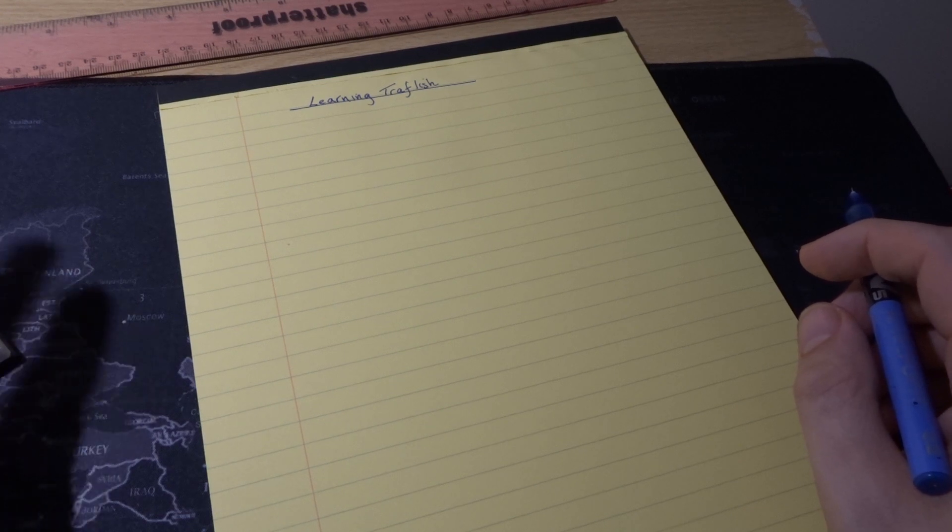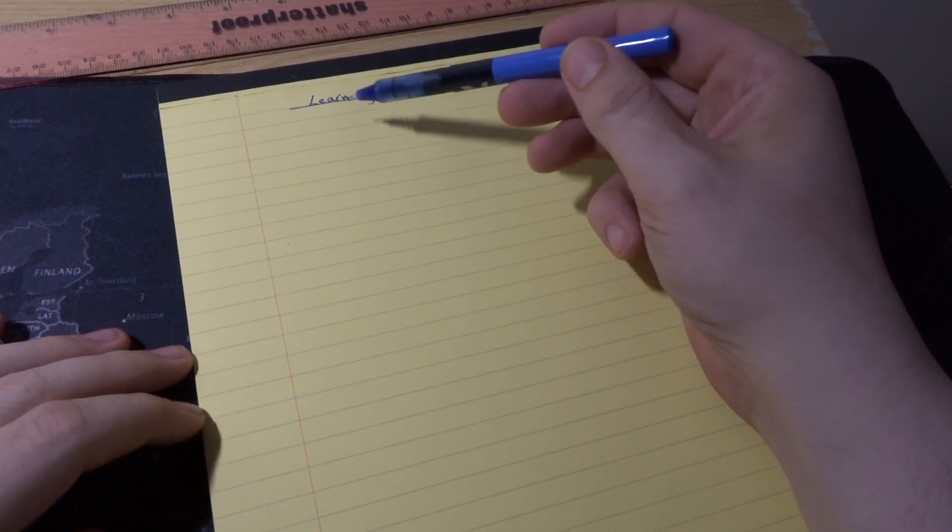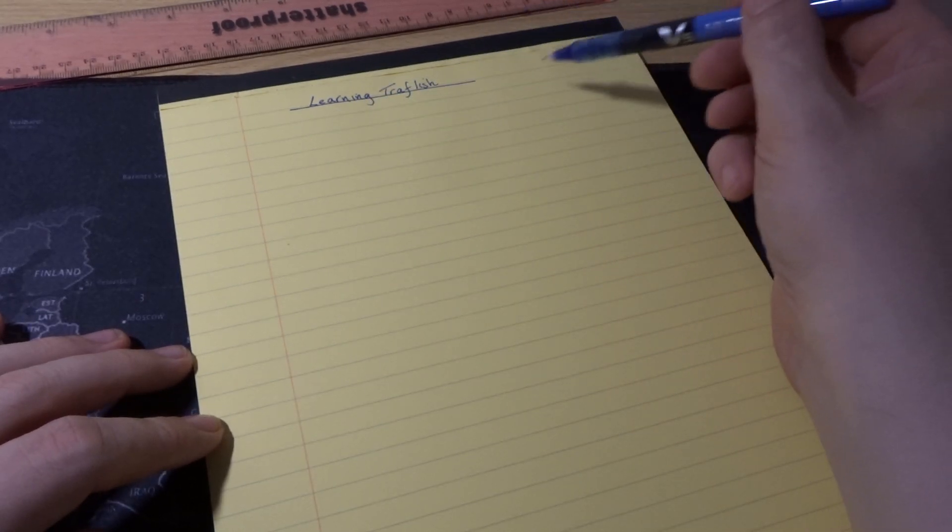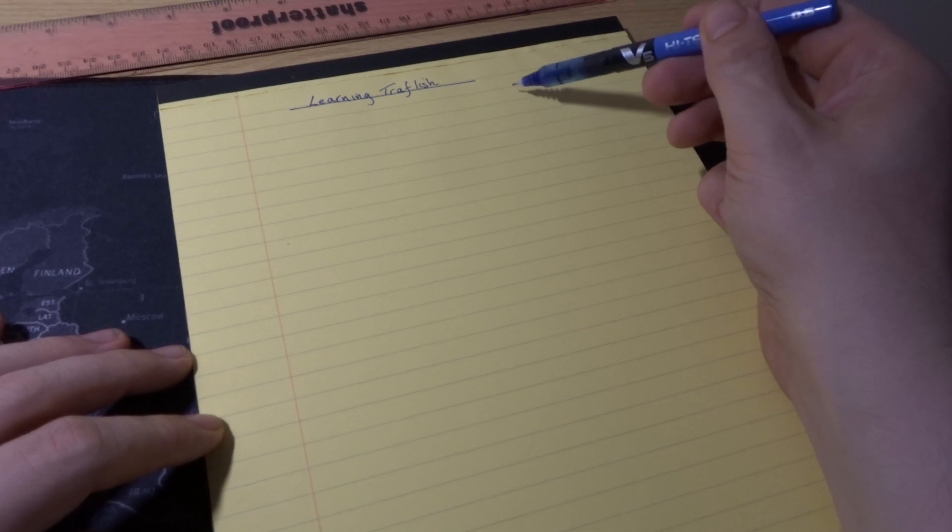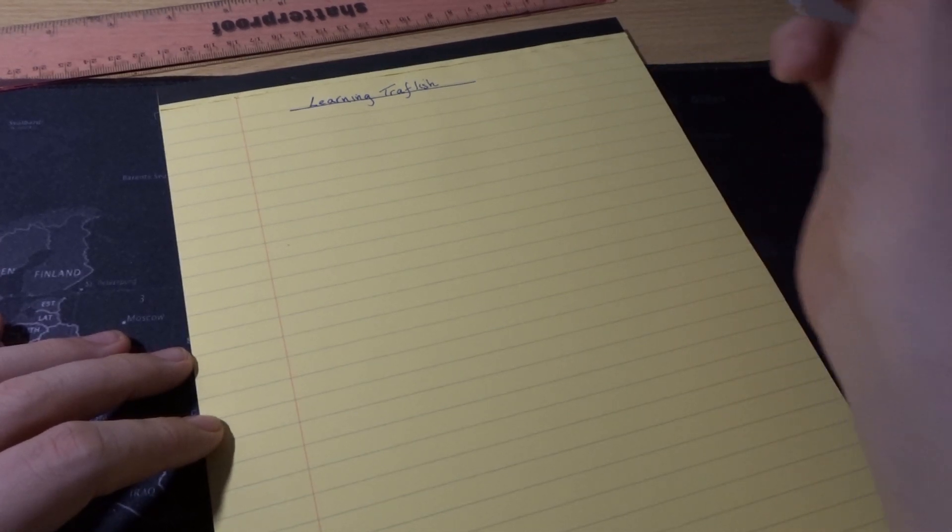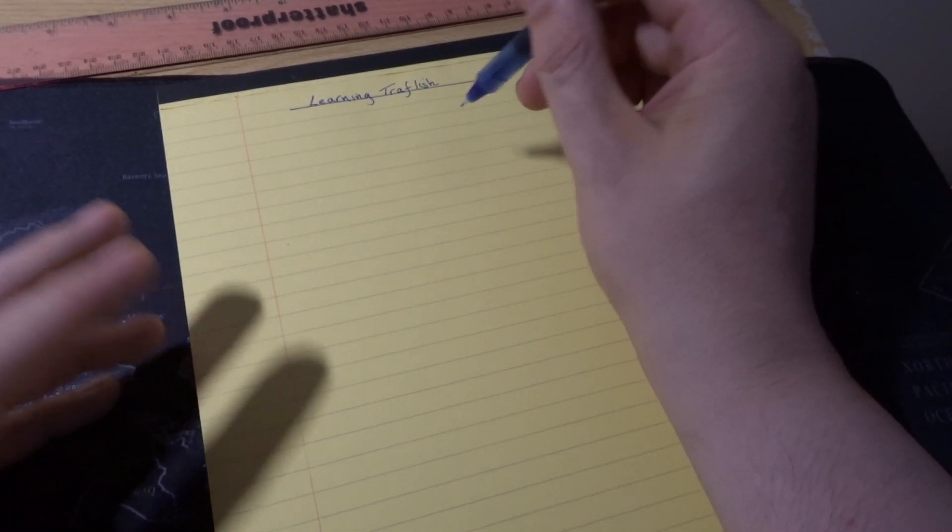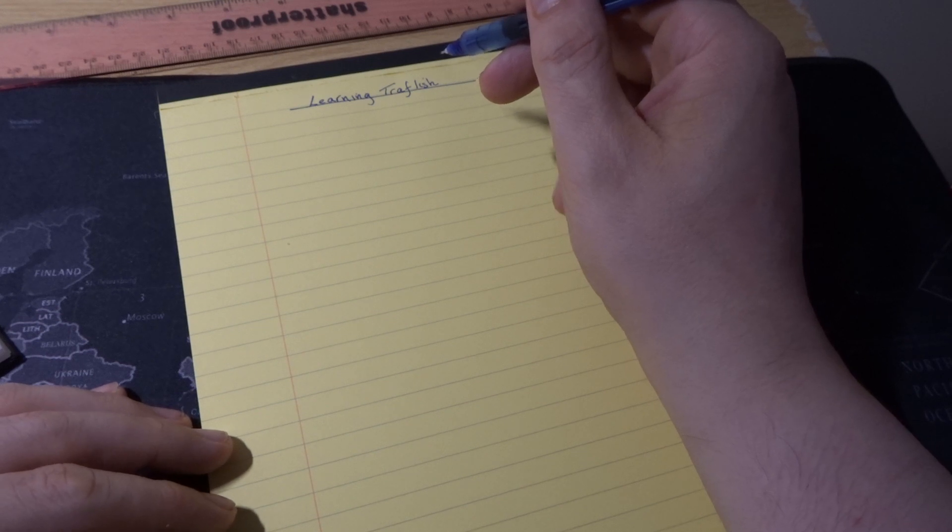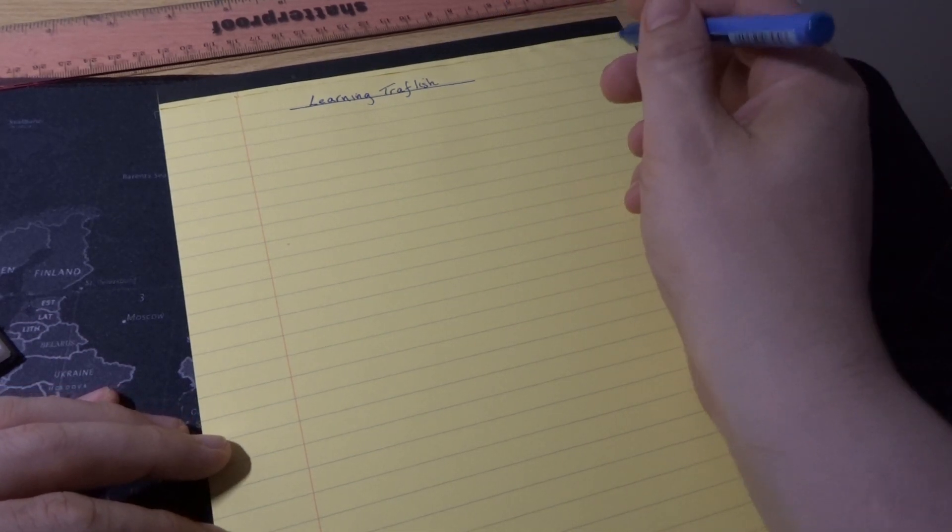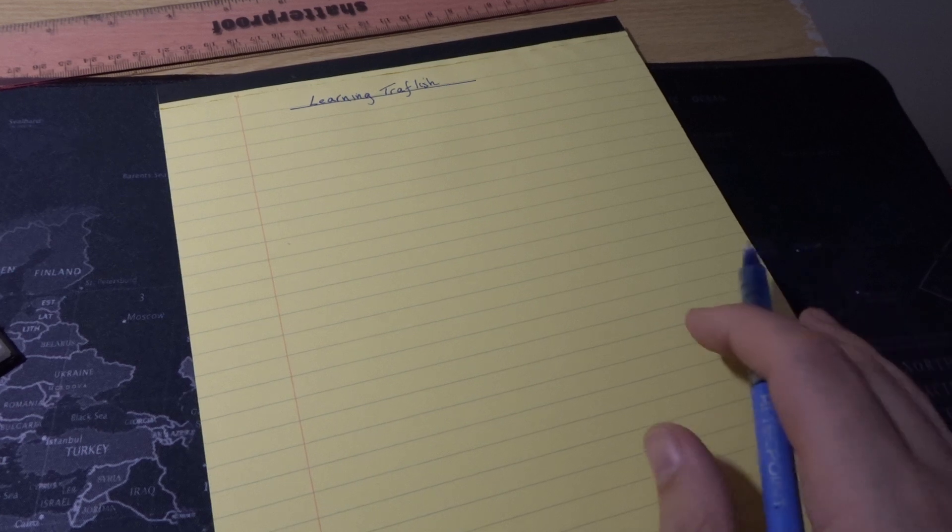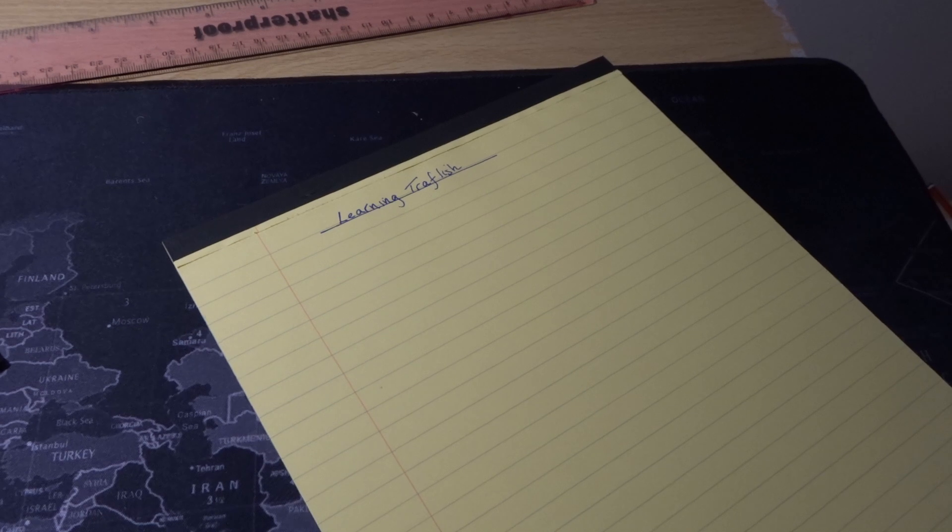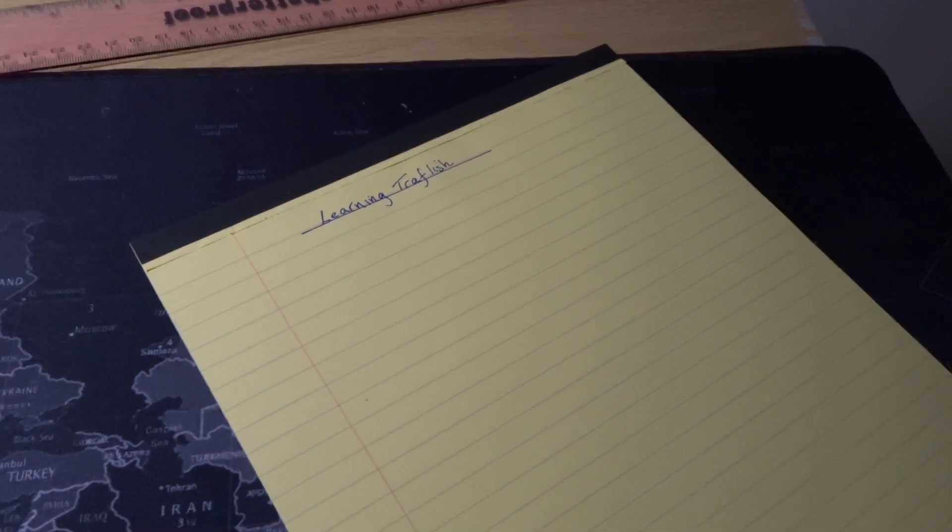I thought I would just write some basic sentences in English down the left hand side and then put in the translations down the right hand side, and then we'll look at the numbers and then just do some vocab.